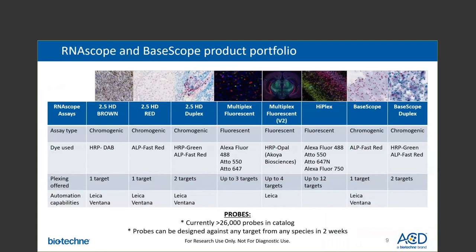This slide summarizes all the assays currently available from ACD. We have chromogenic single-plex brown or red assays, as well as duplex assays on both manual and automated platforms. The multiplex fluorescent assays allow for detection of up to four targets simultaneously in a single tissue slide. The major difference between the two fluorescent assays is that the V2 assay uses TSA from PerkinElmer for signal visualization, whereas the multiplex fluorescent assay is an all-in-one kit. The V2 fluorescent assay is also available on the Leica automation platform. For high-plexing, we have the HiPlex assay, which enables the detection of up to 12 targets simultaneously in a single tissue section, currently available on the manual platform only.